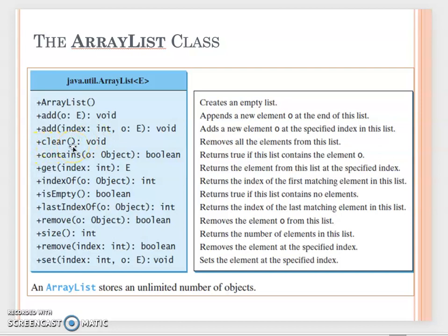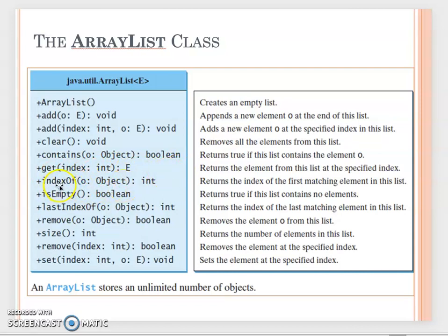The clear() method removes everything from the ArrayList. The contains() method takes an object and returns a boolean indicating whether that object is in the list. The get() method takes an index and returns the object at that position. You can also call indexOf() passing an object to find its index, and isEmpty() to check if the list is empty.